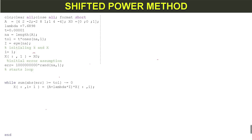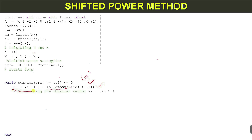Inside the loop, we have the iterative equation of the shifted power method: the shifted matrix multiplied by the starting vector x-naught when i equals 1. After getting the new vector, we normalize it.